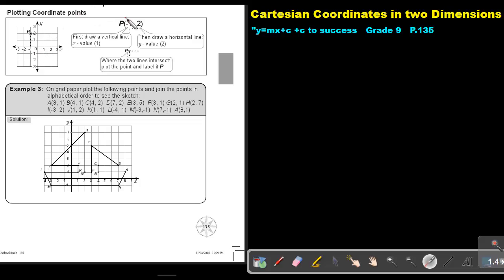If I give you this point and you must plot it, first draw a vertical line, a line to the x-axis. It's going to be somewhere here, negative 1. Then draw a horizontal line at 2, there. Where those two lines intersect, that is the point.